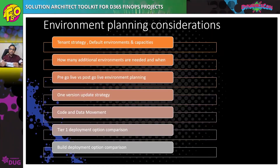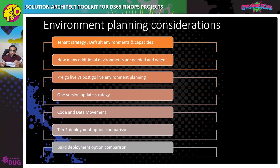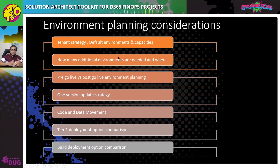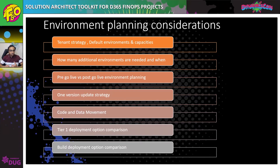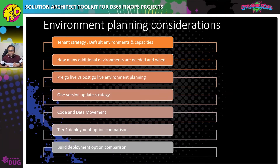Let's talk about environment planning, which is very important because it starts from the beginning of the project and is a discussion that happens at every stage, as it involves both cost and strategy. During early phases, talk about the tenant strategy. What I have seen is that some companies realize towards the end of the project, just before go-live, that they need a non-production tenant. You should also understand what default environments you get when you buy a Dynamics 365 subscription and what capacities — such as Dataverse, Power Platform, or Azure storage — are included.